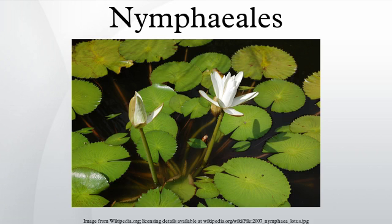At least ten morphological characters unite the Nymphaeals. Molecular synapomorphies are also known. The Plant List, created by the Royal Botanic Gardens, Kew and Missouri Botanical Garden, recognizes about 70 species in 11 genera within the order, but a phylogenetic study of the genus Nymphaea implies that the number of species could be more than 90. The difference in species numbers is due almost entirely to the difficulty of delineating species in the genus Nymphaea.